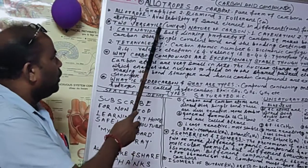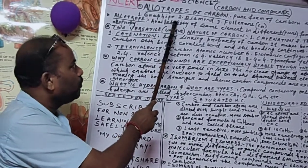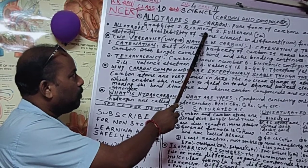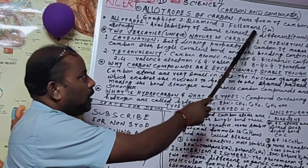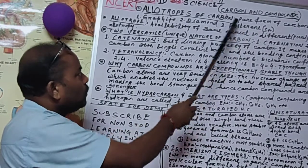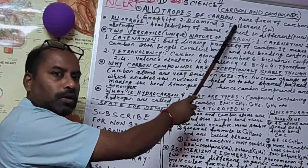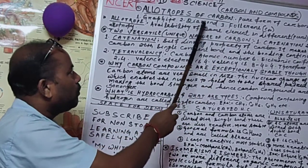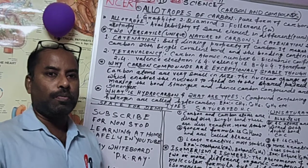The three different pure forms of carbon — the allotropes of carbon — are: graphite, which is a pure form of carbon; diamond, which is a pure form of carbon; and fullerene (C60), which is also a pure form of carbon. These three are called the allotropes of carbon, and the property by which carbon shows this is known as allotropy.